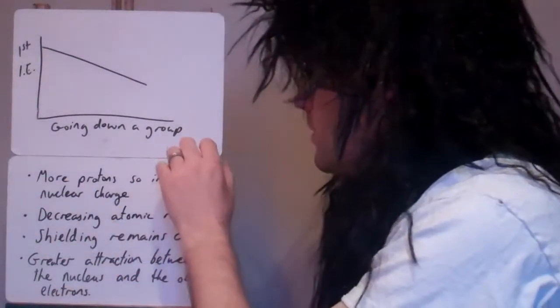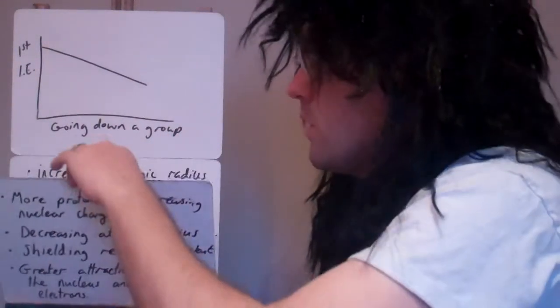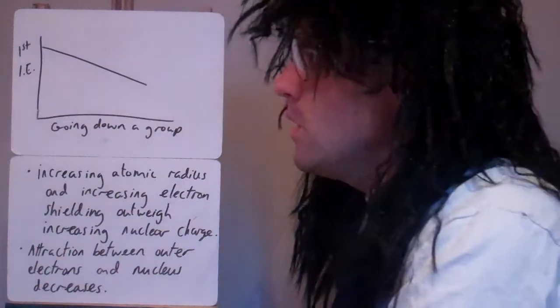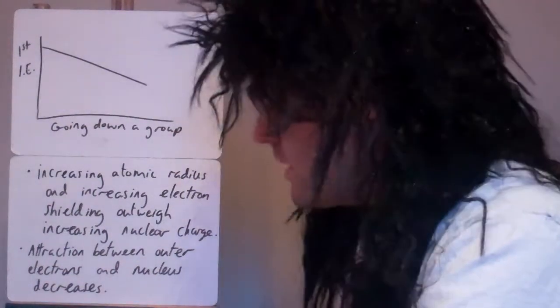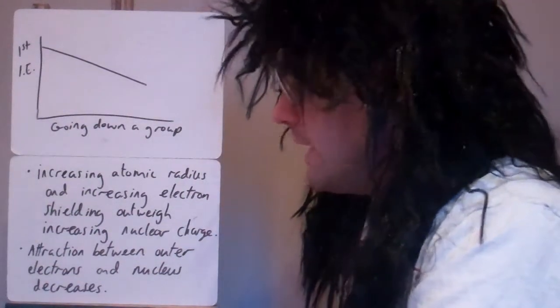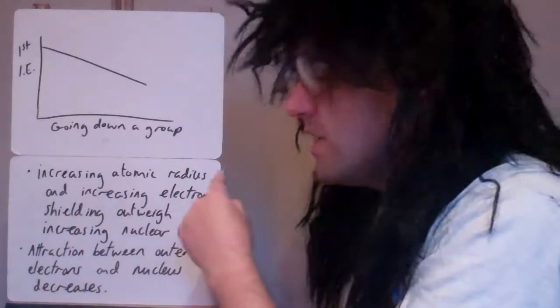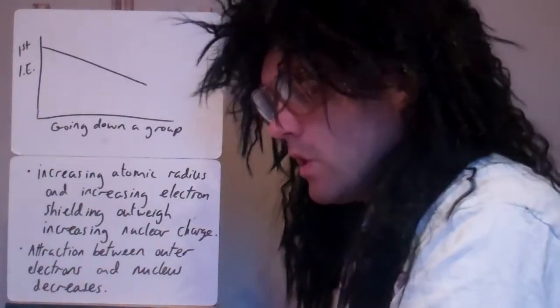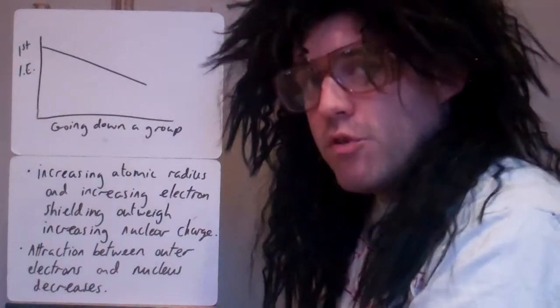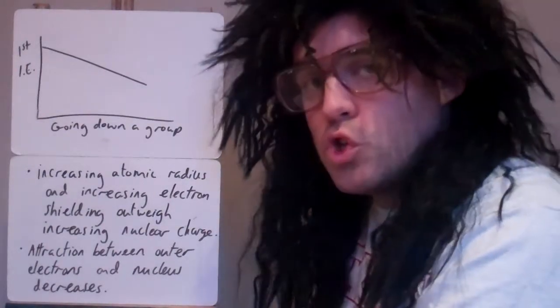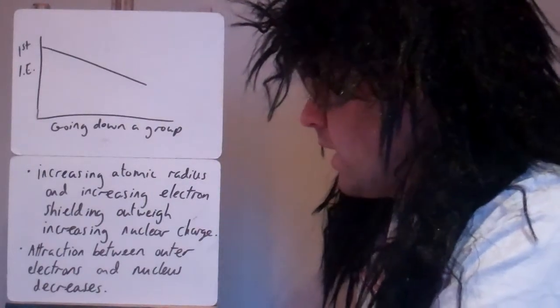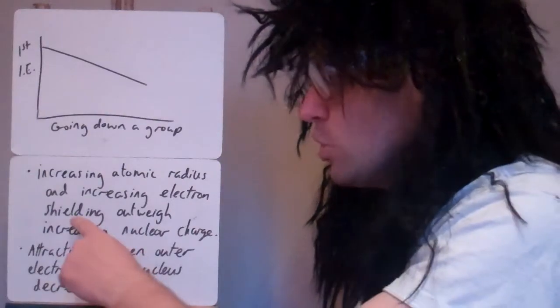Okay. If we look at what happens as we go down a group, as you go down a group of the periodic table, the first ionisation energy decreases. As you go down a group, we've got increasing atomic radius now. So before, across the period it had decreased, so now we've got increasing because there's more shells as you go down a group. And if there's more shells, there's more shielding as well.